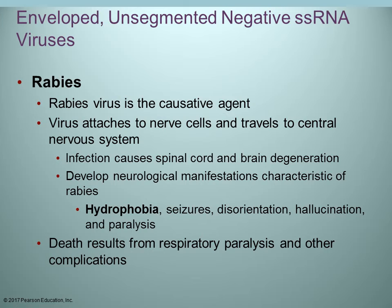Rabies is caused by the rabies virus. Usually a person obtains the virus from a bite, and the virus attaches to a nerve cell and undergoes retrograde movement — moving against the normal direction, traveling up the axon to the main cell body, then to the next nerve until it infects the spinal cord and brain. Symptoms of rabies include hydrophobia, seizures, disorientation, hallucination, and finally paralysis.